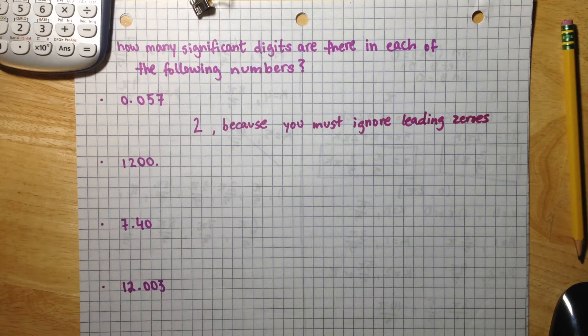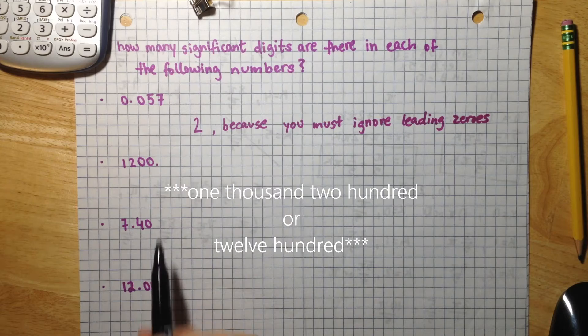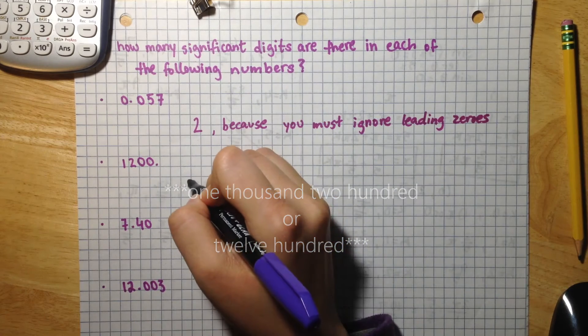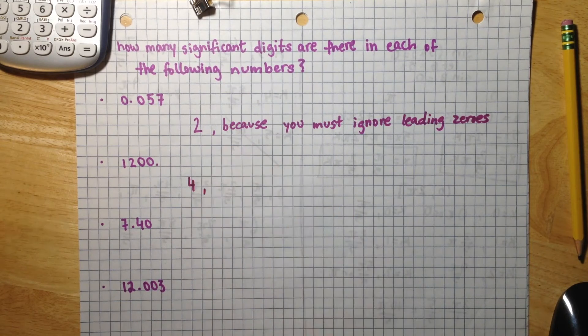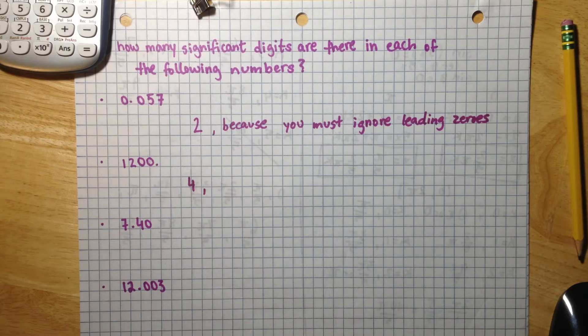The next number is 1,200 and there is a decimal point at the end. This decimal point makes this four significant figures because if there is a decimal point you must count trailing zeros as significant digits.